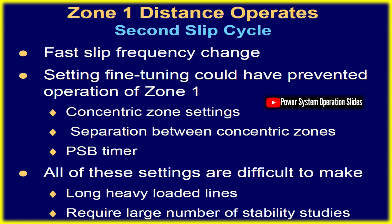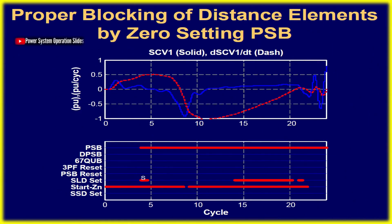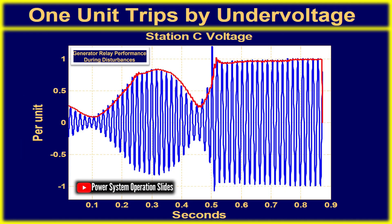The operation of distance relays during swings depends on the interaction between the relay's polarizing memory and measured electrical parameters. Modern microprocessor-based distance relays, equipped with frequency tracking, are less influenced by memory rotation. However, if a line's positive sequence impedance is significantly higher than system impedance, relays may still trip unnecessarily.